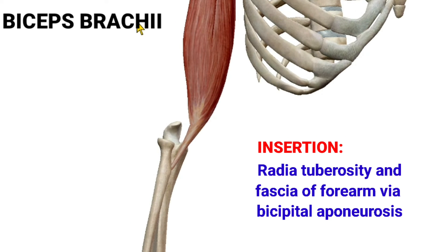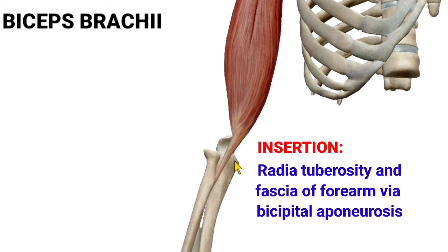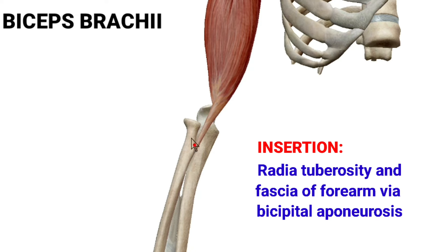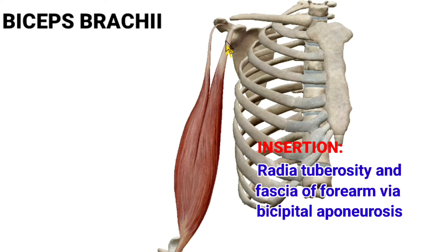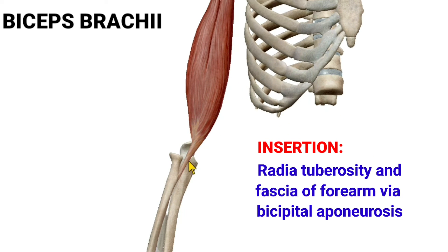About the insertion: the insertion is into the radial tuberosity. Here, this is the radial tuberosity, and the biceps brachii muscle is inserted into the radial tuberosity and also into the bicipital aponeurosis. Aponeurosis is a flattened tendon. So the muscle is inserted into both the bicipital aponeurosis and the radial tuberosity. In summary, the origin is from the short head at the tip of the coracoid process of scapula and the long head from the supraglenoid tubercle, inserted into the radial tuberosity and bicipital aponeurosis.